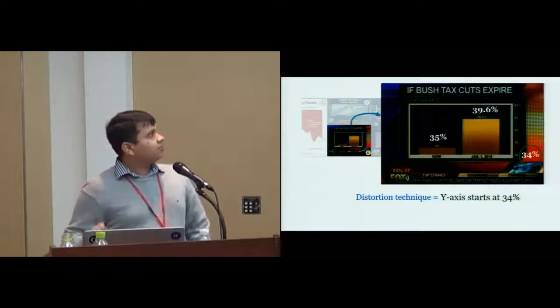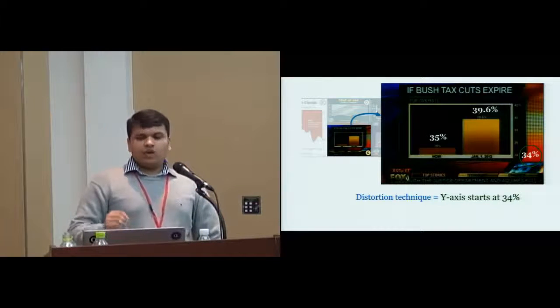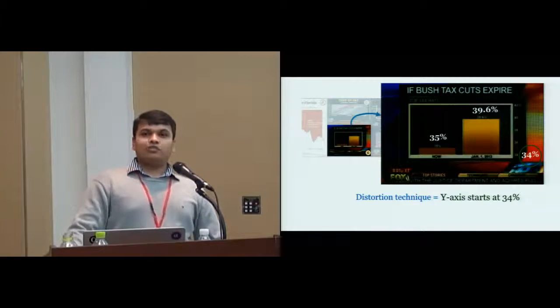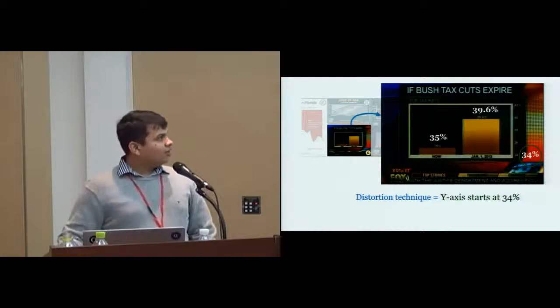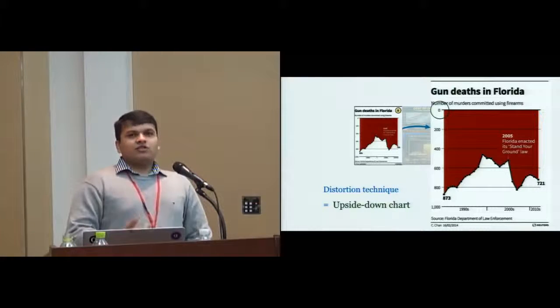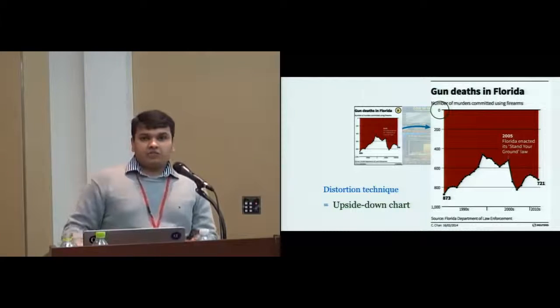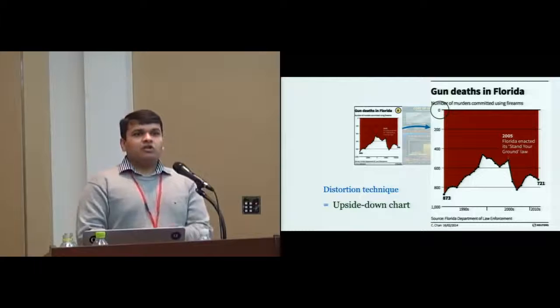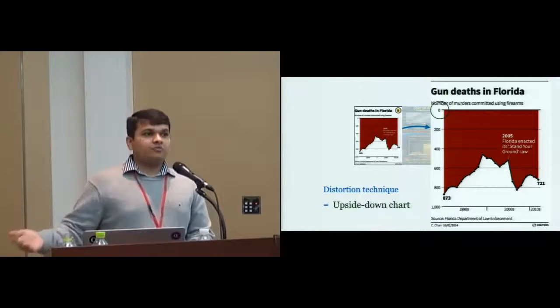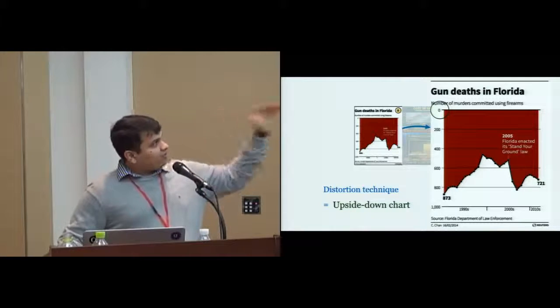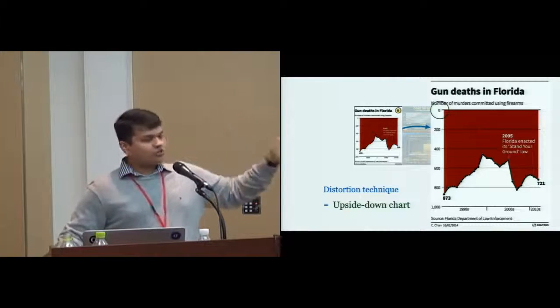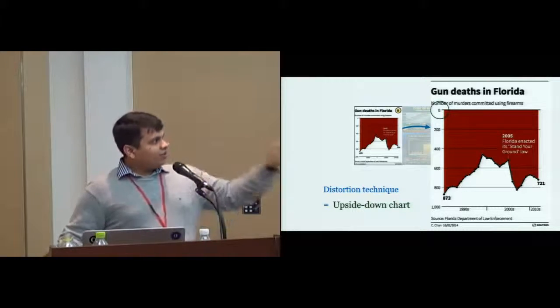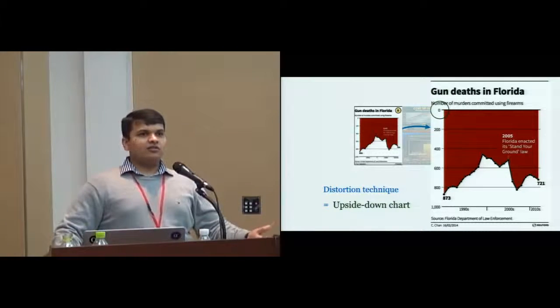Let's look at this example. We have a bar chart where the y-axis starts with 34%. If you're going to compare 39.6% with 35%, it looks like 39.6 is at least five times bigger than 35%. That's plain wrong mathematics. Here's another example from Reuters about Stand Your Ground Law enacted by Florida government. The chart is upside down. It looks like when the law was enacted in 2005, the crime rate decreased substantially, but it's actually the other way around.